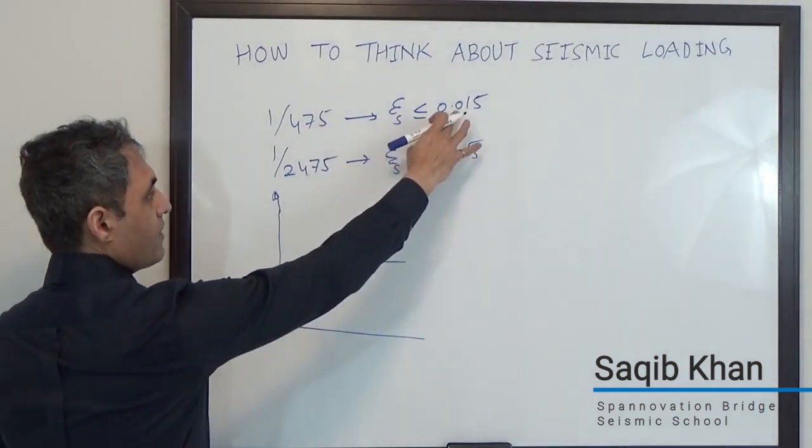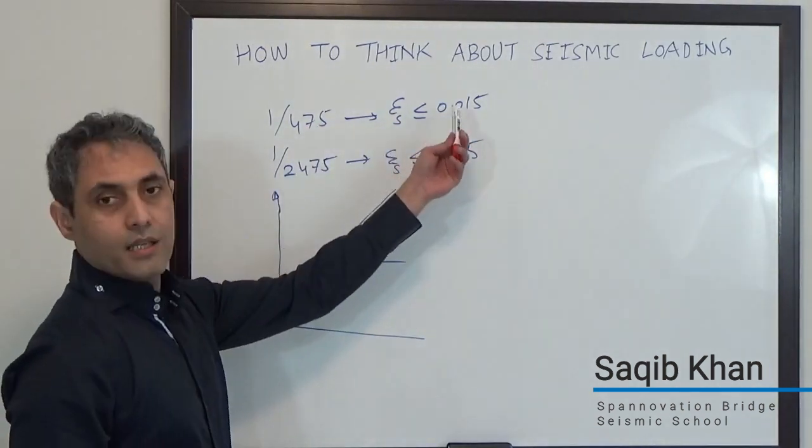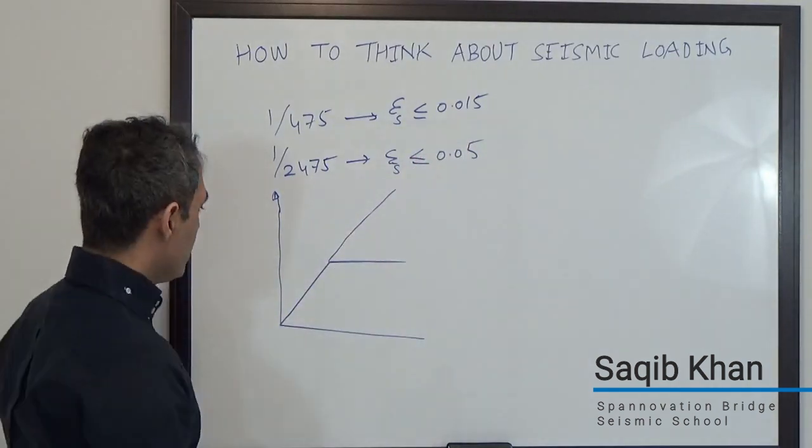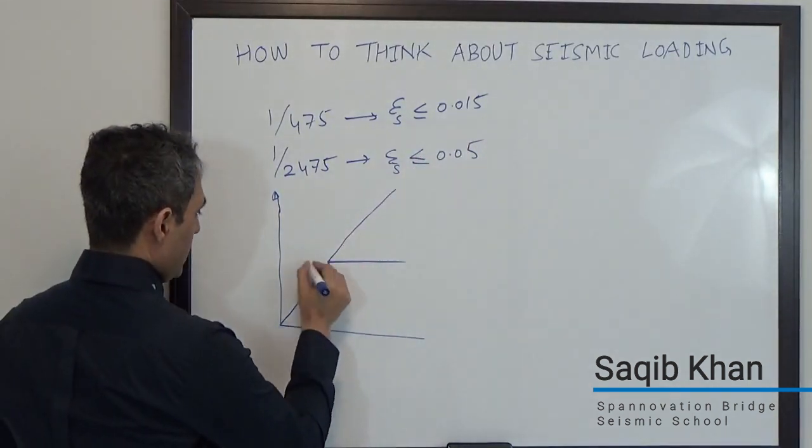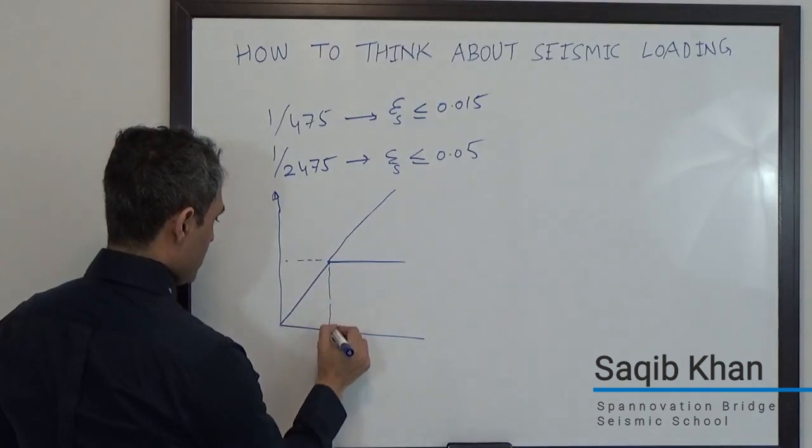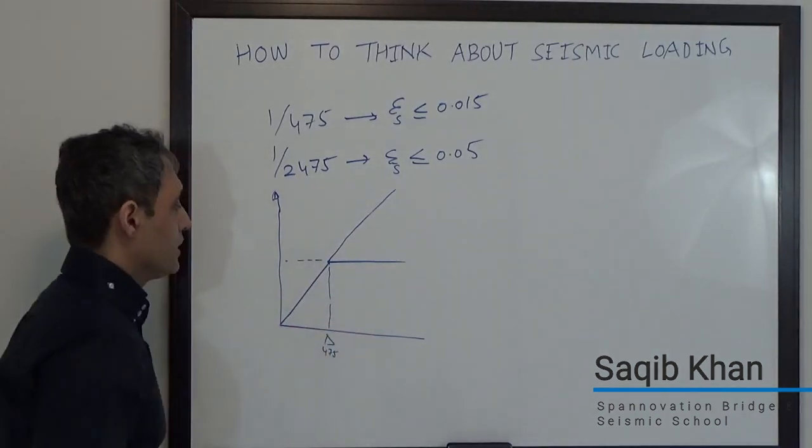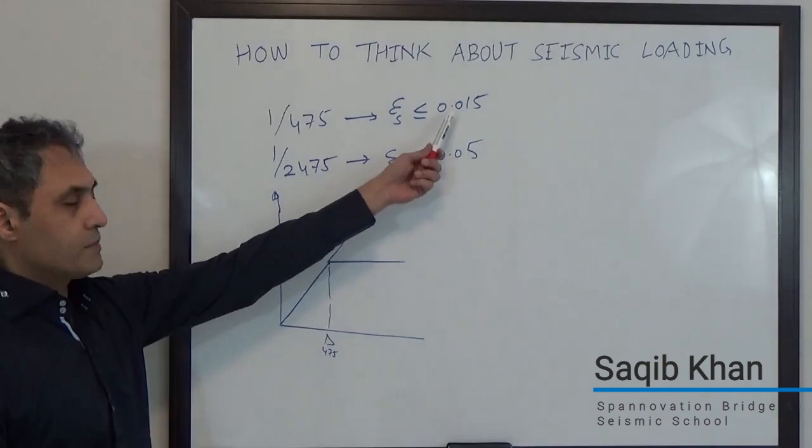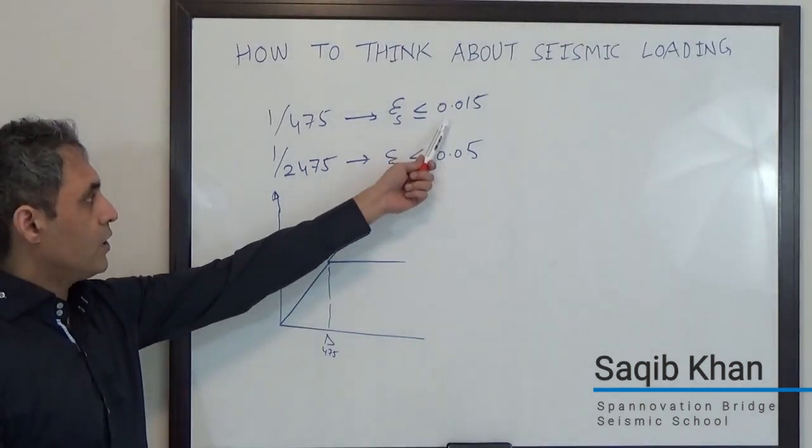Now the 1 in 475 is very close to its elastic or ultimate demand. So I can say, well, I have designed it for this. This was the deformation level for 475. I have met, as long as my strain in the plastic hinges is smaller than that, I've met my performance level.